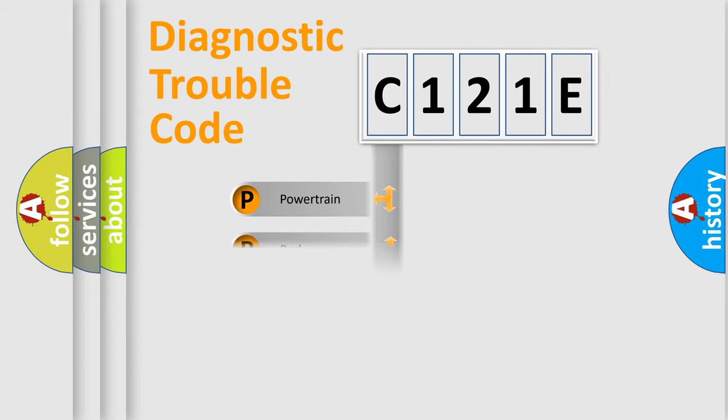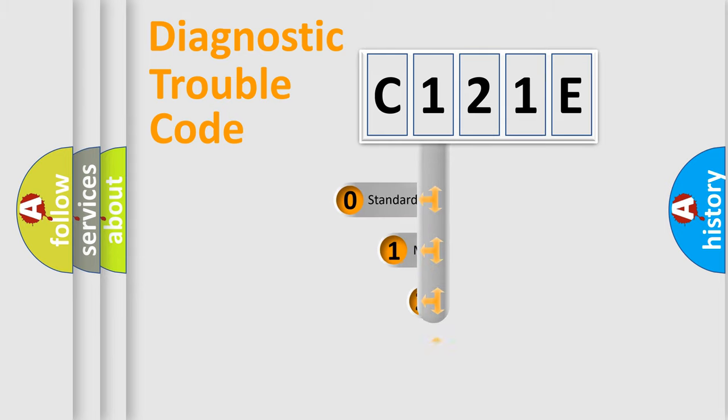Powertrain, Body, Chassis, Network. This distribution is defined in the first character code.